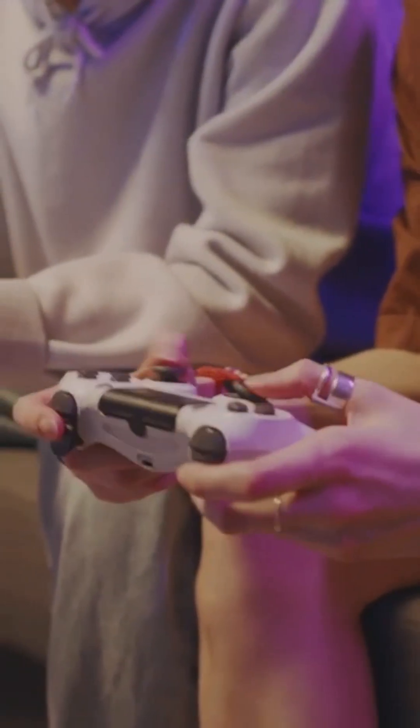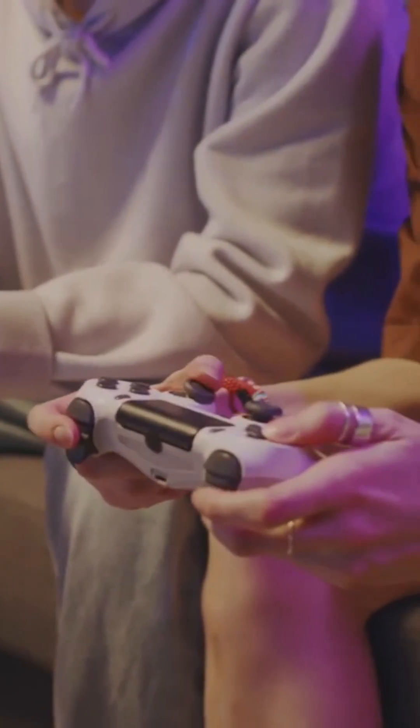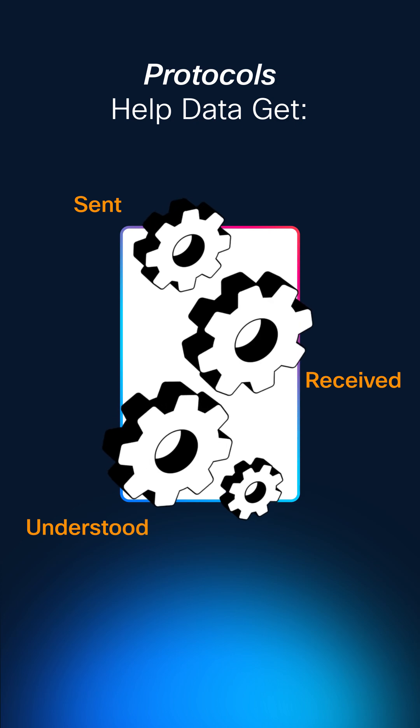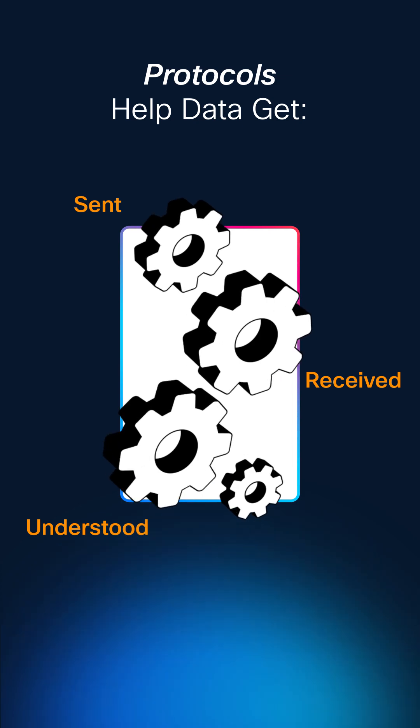A protocol is basically a set of rules that devices follow to talk to each other over a network. Imagine trying to play a video game with someone, but you don't speak the same language and you don't agree on the same rules — it would be hard to get started. That's exactly what protocols solve. They are the agreed-upon rules that make sure data is sent, received, and understood correctly, no matter the device.